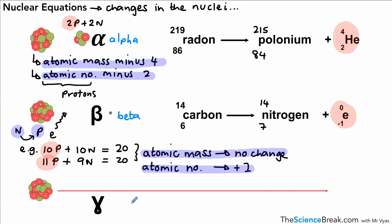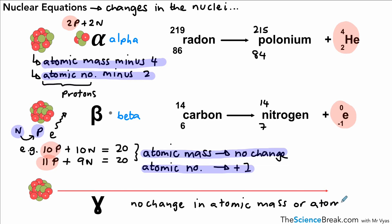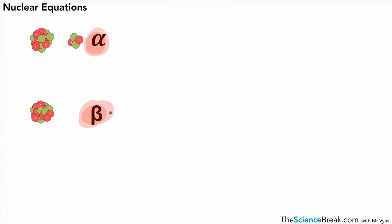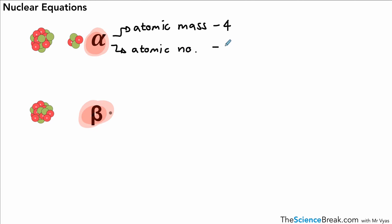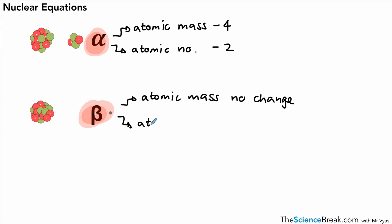It's worth noting that when gamma radiation is given off, there's no change in the atomic mass or the atomic number, because we're not losing any particles from the nucleus. To summarize: for alpha decay, atomic mass minus 4 and atomic number minus 2; for beta decay, no change in atomic mass and atomic number plus one.